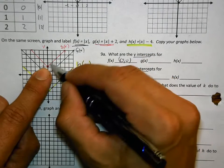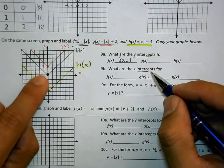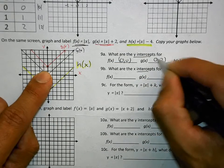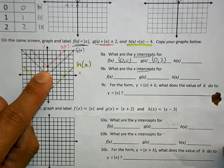g of x, where does g of x cross? 0, 2, like a scholar, you wrote it as an ordered pair.